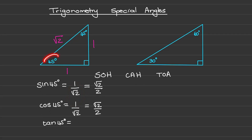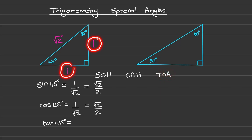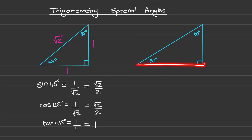They can also be presented as the square root of two over two instead of one over square root of two. Lastly, the tan of 45 degrees is the length of the opposite divided by the length of the adjacent, so that is one over one, which equals just one. Now let's move on to our second triangle.